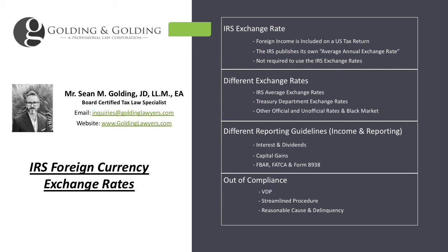In addition to income reporting, you also have foreign account reporting and asset reporting — FBAR and Form 8938. Unless the form specifically tells you which exchange rate to use, you generally use the Department of Treasury December exchange rate. You can pick any quarter, but most people — and IRS agents — seem to appreciate consistency, so using the December exchange rate is standard. FBAR is foreign bank and financial account reporting; FATCA Form 8938 is used to report specified foreign financial assets.